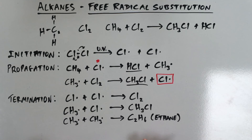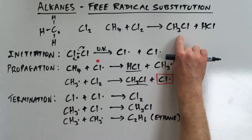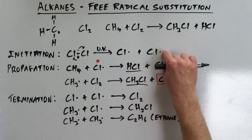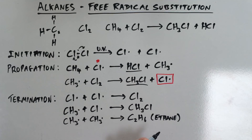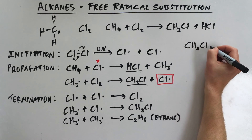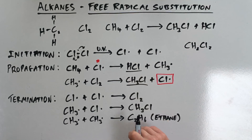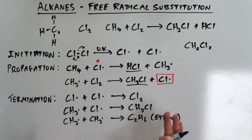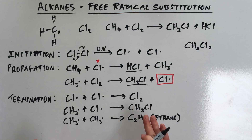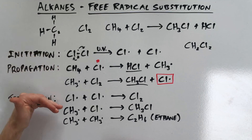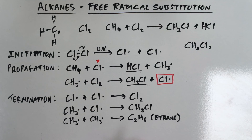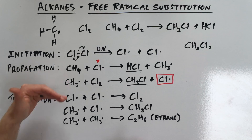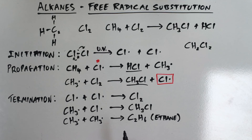One final thing: the reaction doesn't necessarily stop at CH₃Cl. Remember, we've got chlorine free radicals flying around — they could very easily react with CH₃Cl further, and you could end up with CH₂Cl₂ (dichloromethane) or even trichloromethane. You need to leave the reaction a lot longer for that to happen, but you will get a real mixture of products. Be very wary of that. You need to learn this series of reactions for free radical substitution — the forming of the free radical, the propagation reactions, and the termination step.